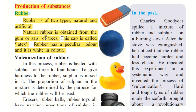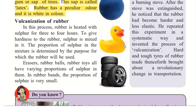Now how is natural rubber changed into artificial? We have seen that we use various products made out of rubber. There is an eraser, a ball, a toy, and rubber is also used to make tyres for our vehicles. That process of changing natural rubber to artificial rubber is called vulcanisation of rubber.